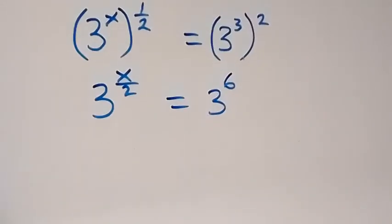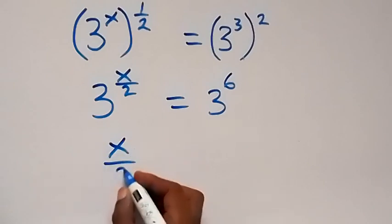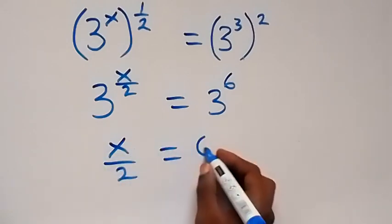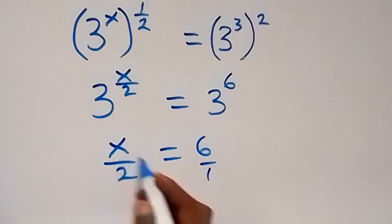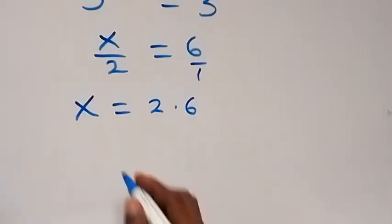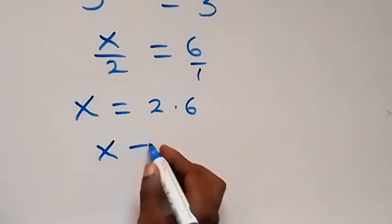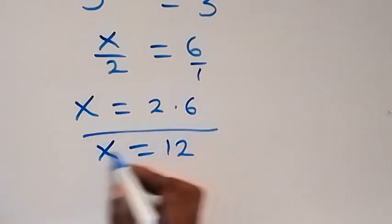We have 3 raised to power 6. Since we have the same base on both sides, we can equate the powers and we have x over 2 equals to 6. We can cross-multiply: x times 1 is x, and 2 times 6 gives us 12. So x equals to 12.